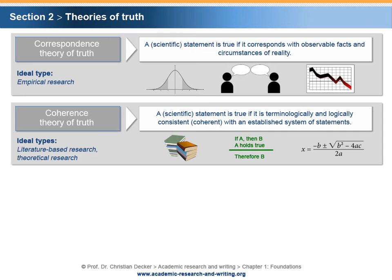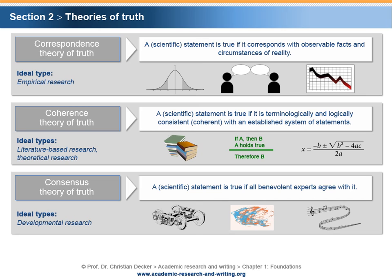The coherence theory of truth postulates that a scientific statement is true if it is terminologically and logically consistent, or coherent, with an established system of statements. The coherence theory predominantly matches and supports literature-based research and theoretical research in which researchers base their thoughts on documented previous knowledge.